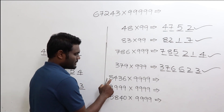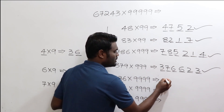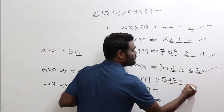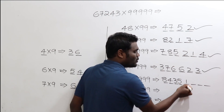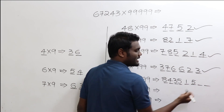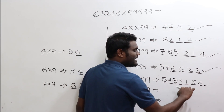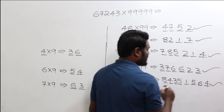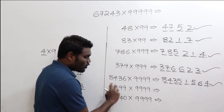Now 8436 times 9999. Subtract one: 8436 minus 1 is 8435. As you have four digits, you need four more digits. For 8, add 1 to get 9. For 4, add 5 to get 9. For 3, add 6 to get 9. For 5, add 4 to get 9. So the answer is 84351564.